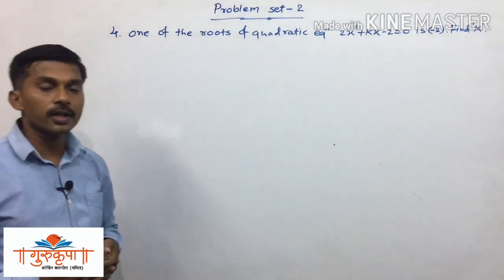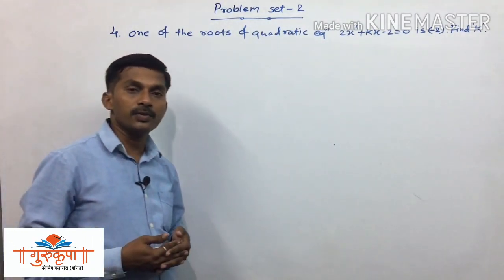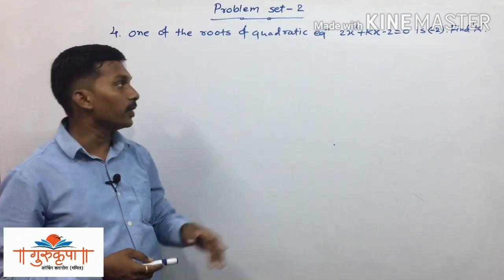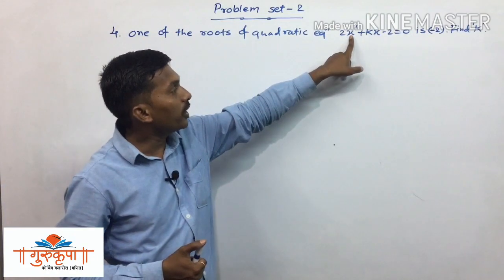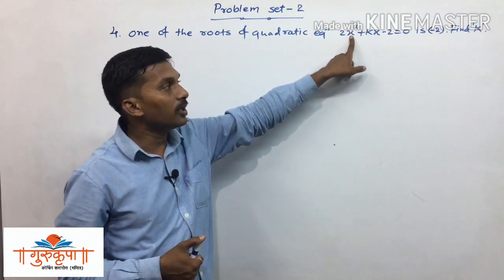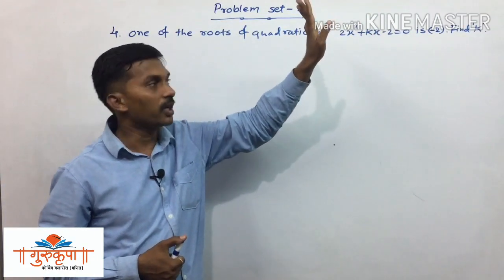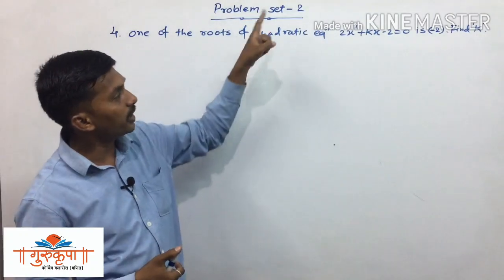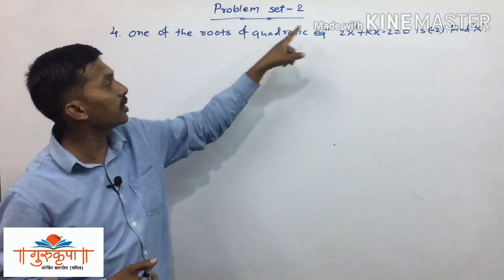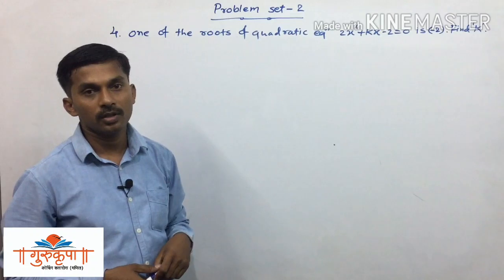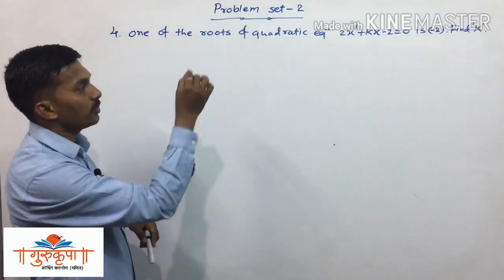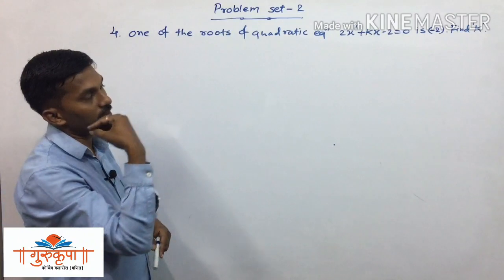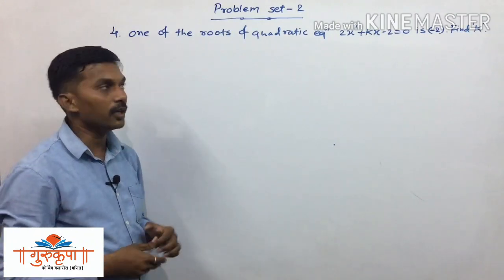We know that every quadratic equation has two roots, and here we are given one root, that is minus 2. This means one value of the variable x is minus 2, and we have to find the value of k. Since minus 2 is the root of the given quadratic equation, we will put this value into the equation to find k.